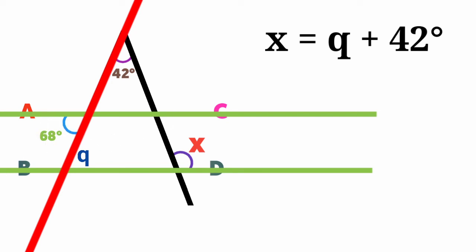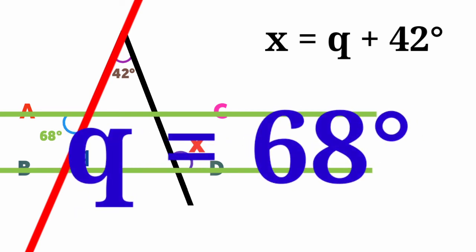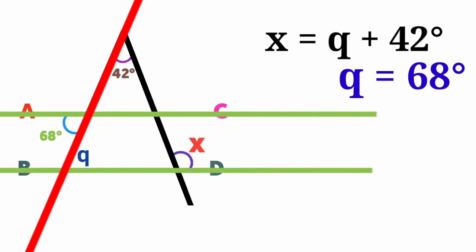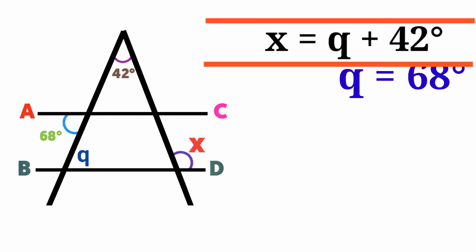And that means angle Q is equal to 68 degrees. So come back to this equation here. Since X is equal to Q plus 42 degrees and Q is equal to 68 degrees, you can just go ahead and substitute the value.